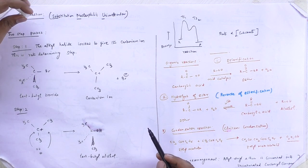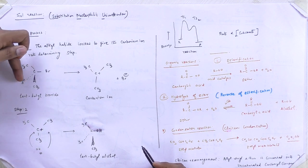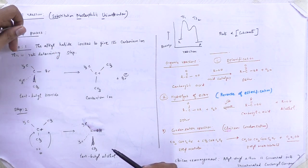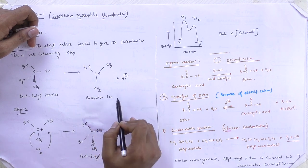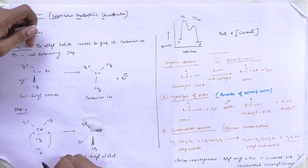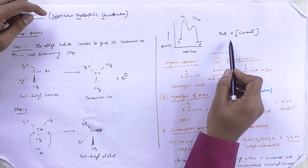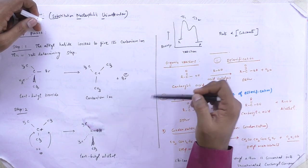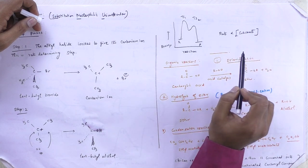The SN1 reaction proceeds by two steps. Using the example of tert-butyl bromide converting to tert-butyl alcohol: Step 1 — the substrate ionizes to give a carbonium ion; this is the rate-determining step. Step 2 — the OH group attacks the carbonium ion, and the final product is tert-butyl alcohol. The rate of reaction depends only on the substrate concentration, making it a unimolecular reaction, and it has two transition states.